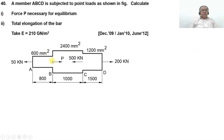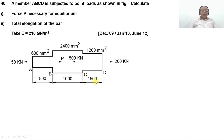Here you have three stepped bars having area of cross-section of 600 mm square between AB, 2400 mm square between BC, and 1200 mm square between CD. AB has a length of 800, BC has a length of 1000, and CD has a length of 1500.